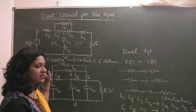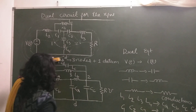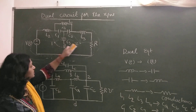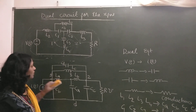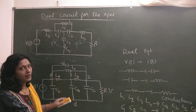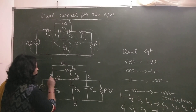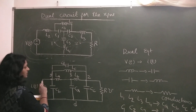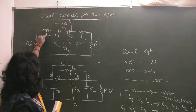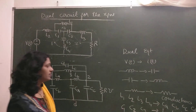This is the dual circuit of the given network. We started with counting the number of loops — the number of loops equals the number of nodes, plus 1 extra datum node. We considered each element one by one, found where they fall between nodes, and drew them in the dual circuit accordingly.